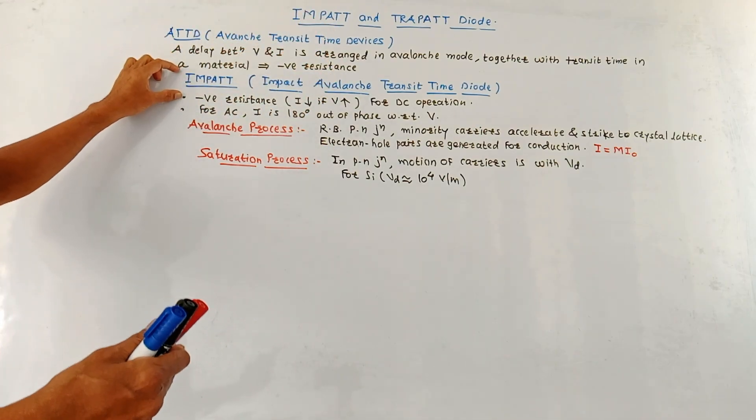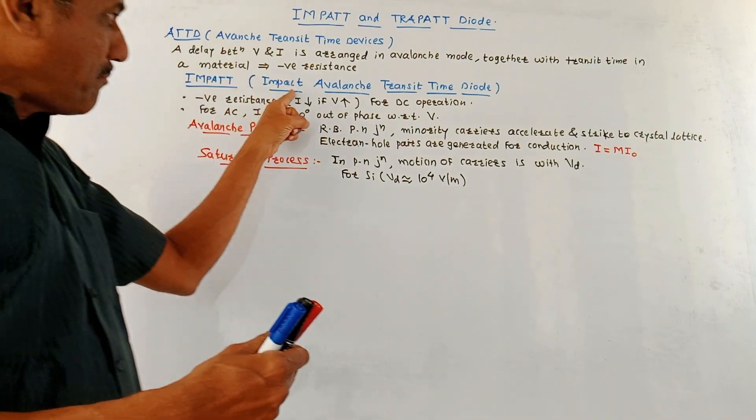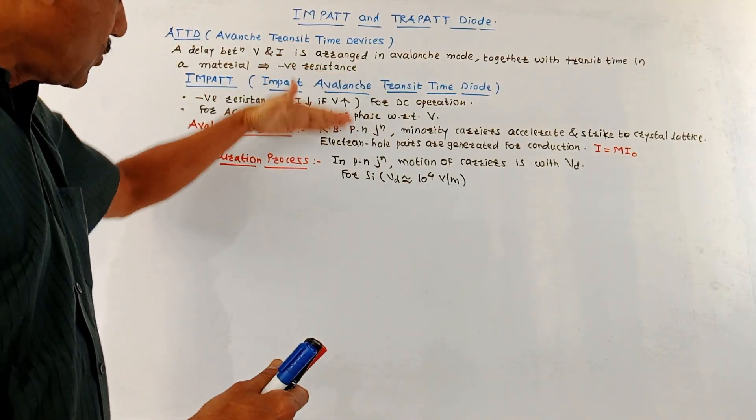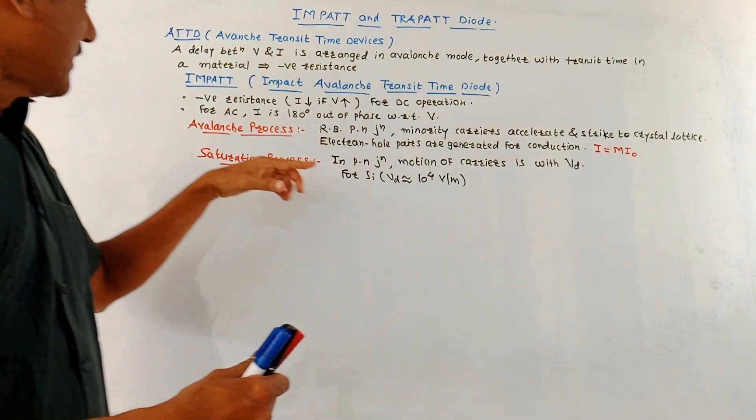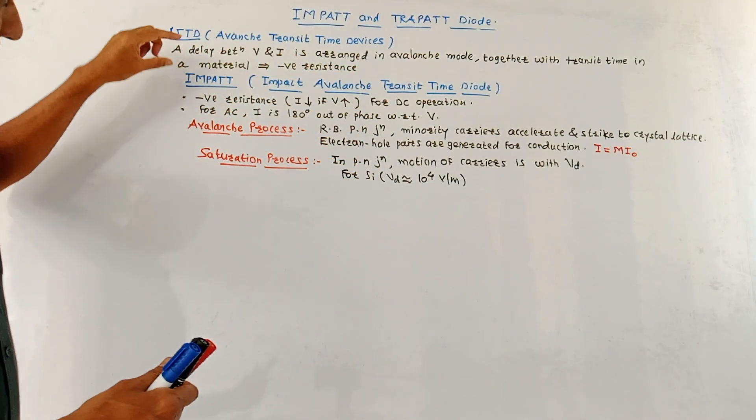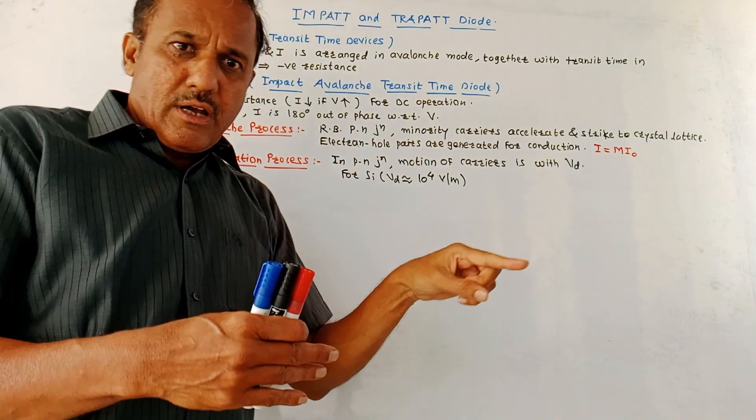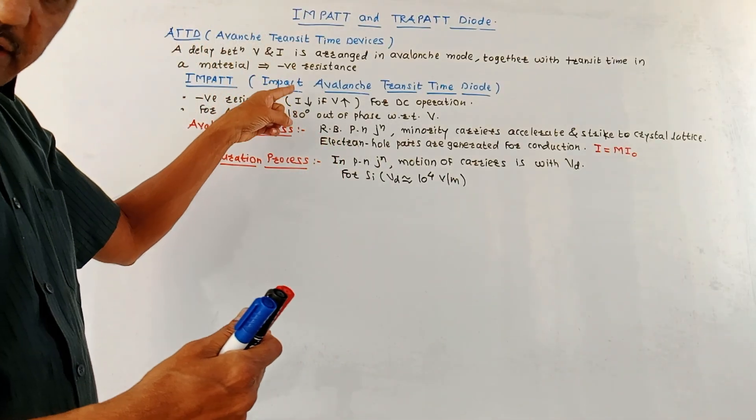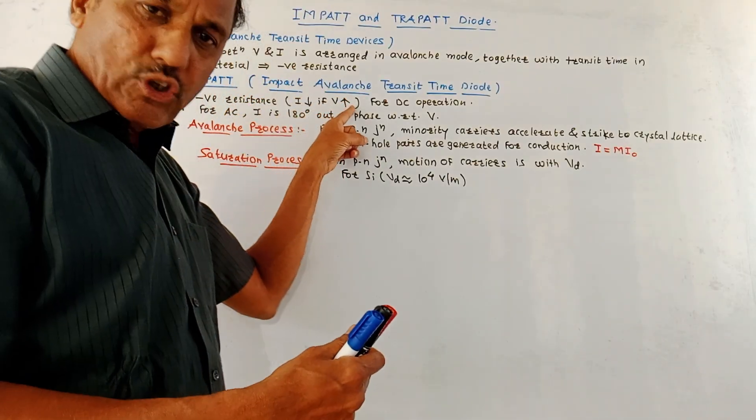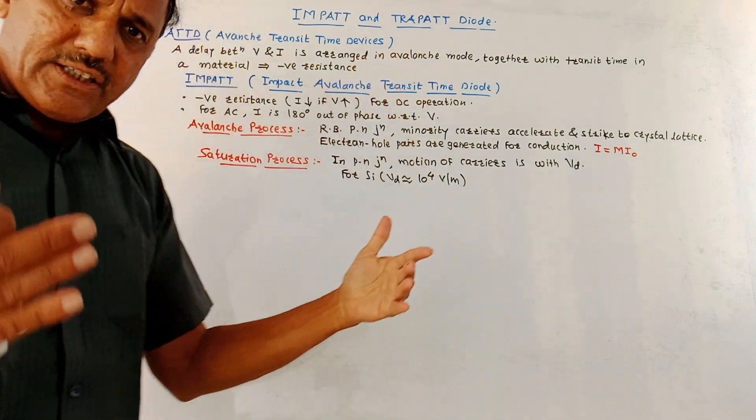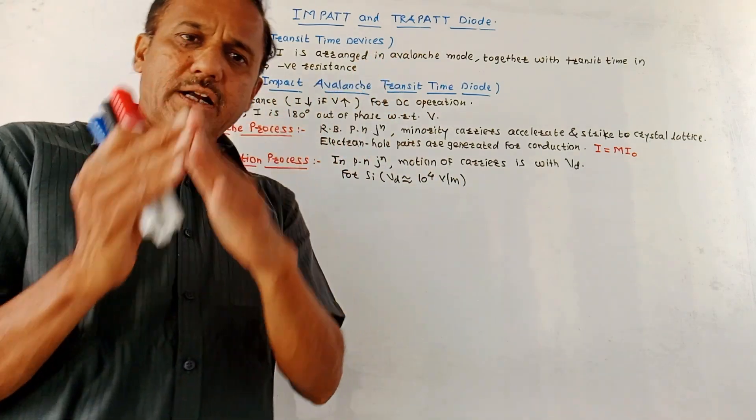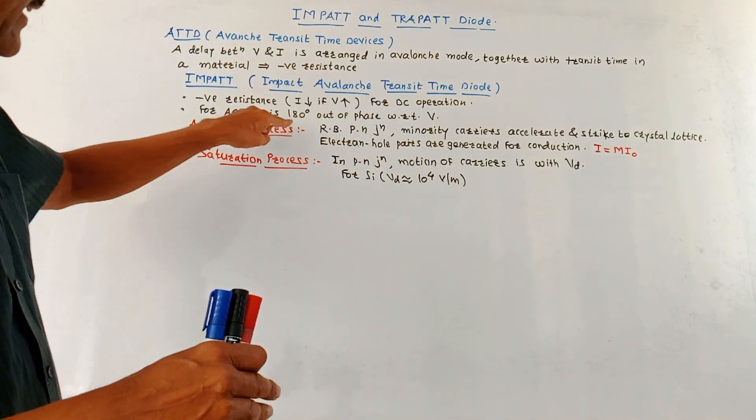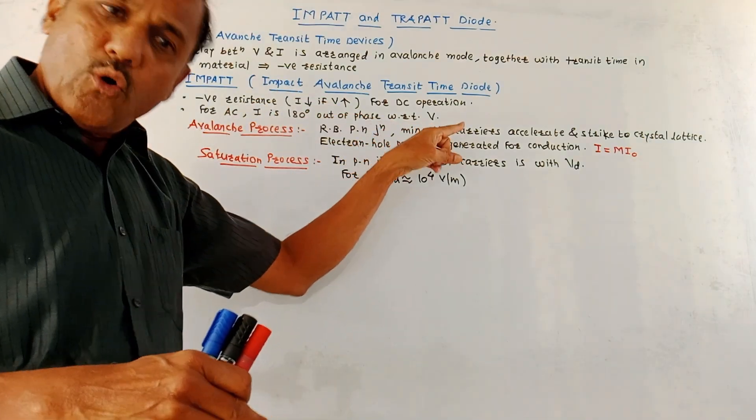So first type of such device is IMPATT diode. It is impact avalanche transit time diode. Now this diode operates with two basic characteristics. First of all, this IMPATT diode shows negative resistance. That means if you are applying a DC signal, then for DC operation, current decreases as voltage goes on increasing. Whereas if you apply AC signal, then in that case the current and voltage are 180 degree phase shifted.